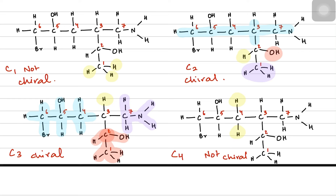I hope you'll be able to figure out whether carbons 5, 6, and 7 are chiral or not. Well, in the next video we'll do some past paper practice of optical isomers. Stay tuned guys, thanks.